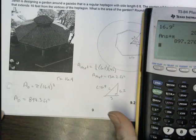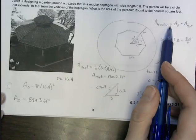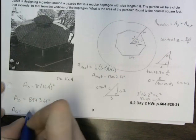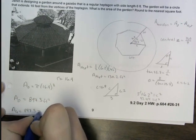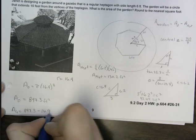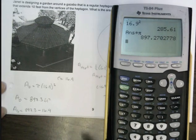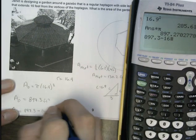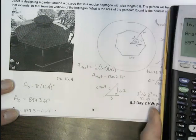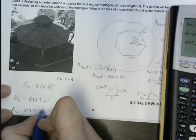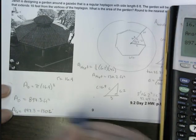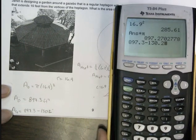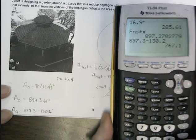And now to find the area of the garden, we go back to our original. So I'm going to take the circle minus the heptagon. So area of the garden is equal to 897.3 minus 16.9. So 897.3 minus 16.9. The area of my heptagon is 130.2. So we'll fix that.